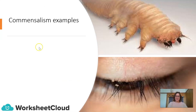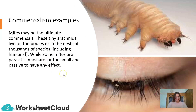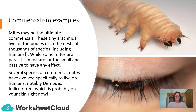Let's take a look at commensalism examples. Mites — perhaps the ultimate commensals. These tiny arachnids live on the bodies or in the nests of thousands of different kinds of species, including us humans. While some mites are parasitic, most are far too small and passive to have any effect. Look closely at those eyelashes, Grade 7s. Several species of commensal mites have evolved specifically to live on humans — notably Demodex folliculorum, which is probably on your skin right now.